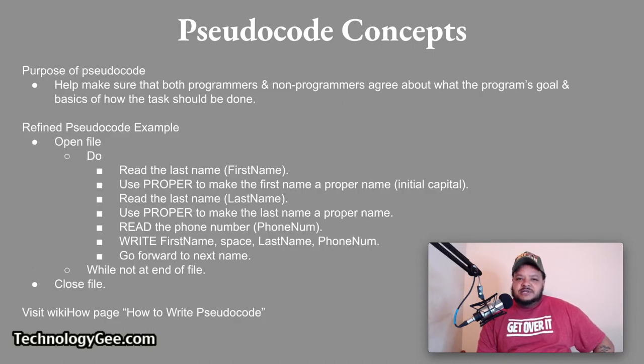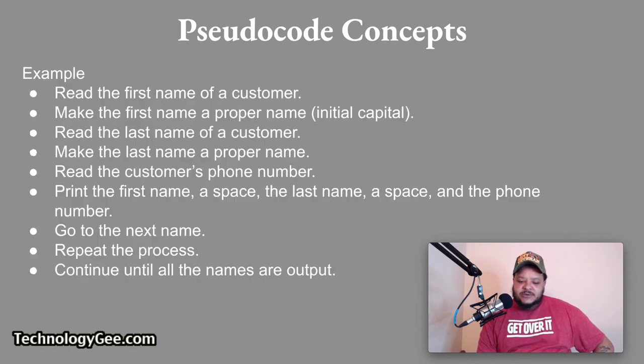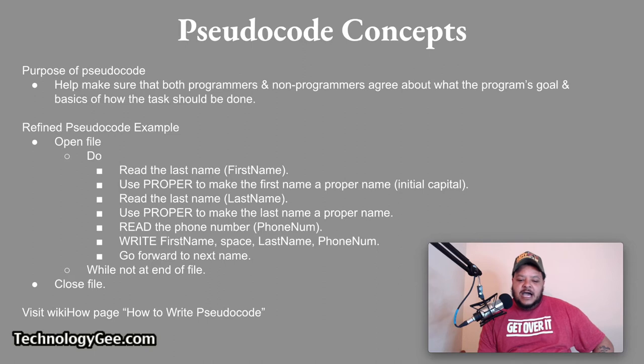Also, the purpose of pseudocode is so that you can help make sure that both programmers and non-programmers agree about what the program's goal and the basics of how the task should be done. So here's an example of a refined pseudocode example after you have consulted with other programmers and managers. So essentially, we took that rough draft and now we're refining it to make it sort of look more like how code might look, depending upon what language you use, of course, to code this thing up. But if you guys want to learn how to write in pseudocode, you can visit the wiki how page titled How to Write Pseudocode, and it teaches you how to create a pseudocode document for your computer program.